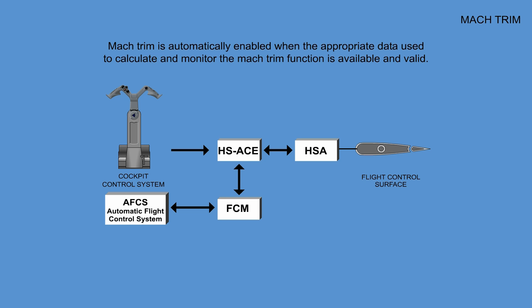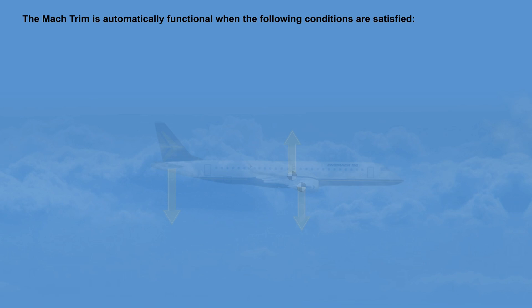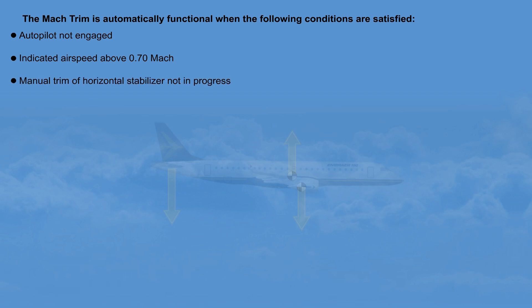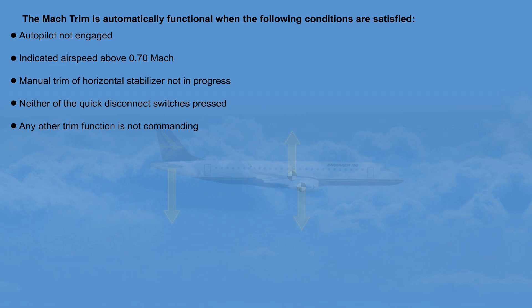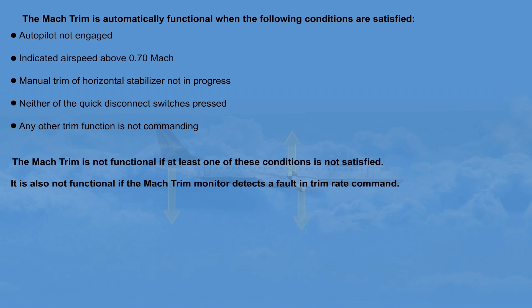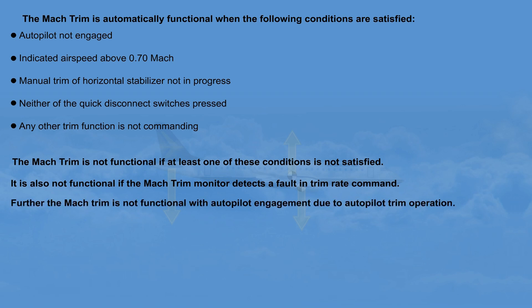Mach trim is automatically enabled when the appropriate data used to calculate and monitor the mach trim function is available and valid. The mach trim is automatically functional when the following conditions are satisfied: autopilot not engaged, indicated airspeed above 0.7 mach, manual trim of horizontal stabilizer not in progress, neither of the quick disconnect switches pressed, and no other trim function is commanding. The mach trim is not functional if at least one of these conditions is not satisfied, if the mach trim monitor detects a fault in trim rate command, or with autopilot engagement due to autopilot trim operation.